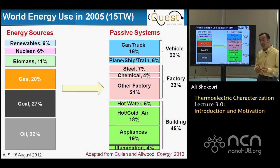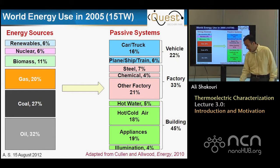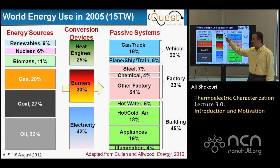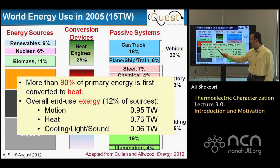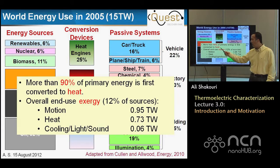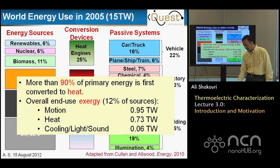Here is different data for the whole world, not just the U.S., covering all energy — not just marketed energy. The number is estimated a little higher, about 15 terawatts. To go between energy sources and end uses, you have energy conversion devices: heat engines in cars, burners, and electricity generation. The key message is that more than 90 percent of primary energy is first converted to heat before it's converted to useful work. The overall end-use exergy — exergy being the ability of energy to do work, energy multiplied by the Carnot factor — is only 12 percent of resources. So when we say the world uses 15 terawatts, in reality less than 2 terawatts is actually useful work.